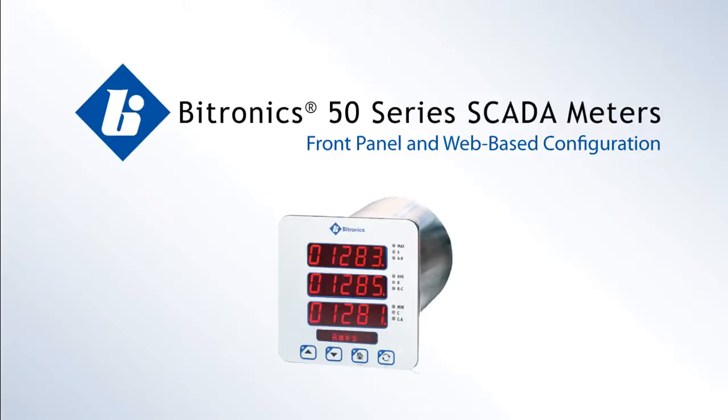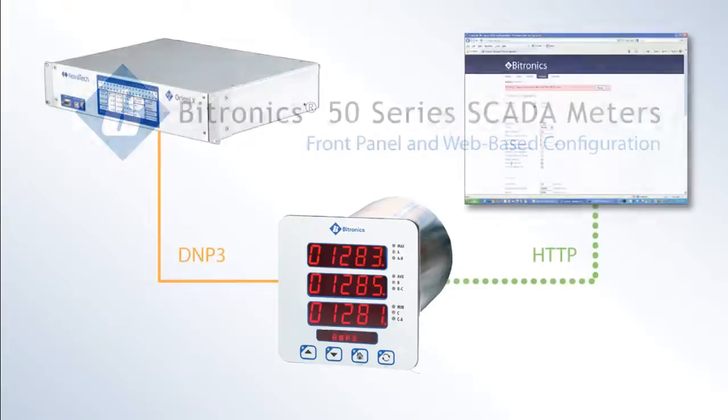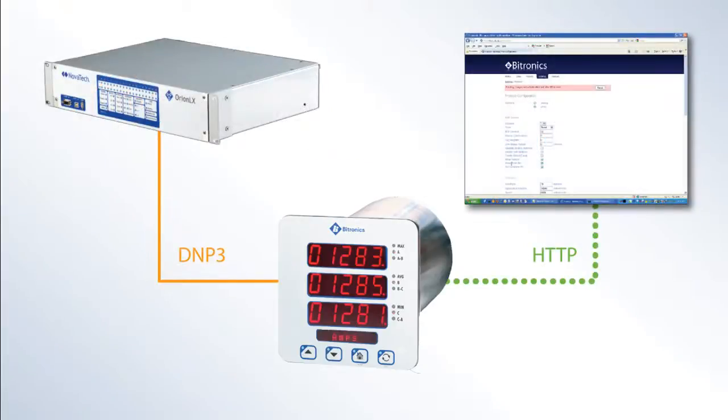This tutorial will describe the procedure for setting up a Bitronics M650 meter to operate in a typical SCADA system. We'll be using DNP protocol and a conventional RS-485 serial connection to an Orion LX which is functioning as the RTU.